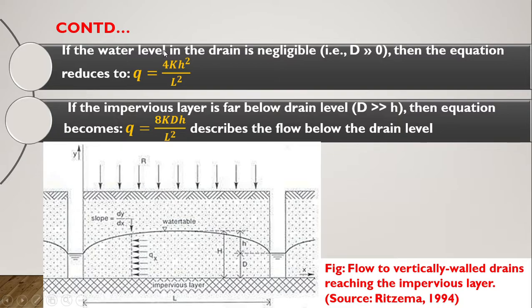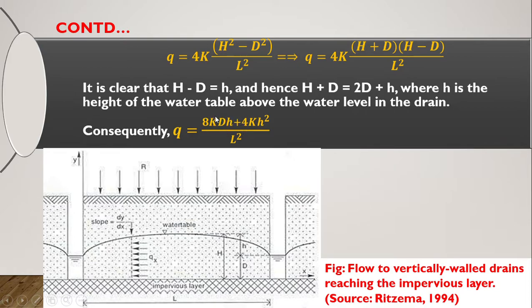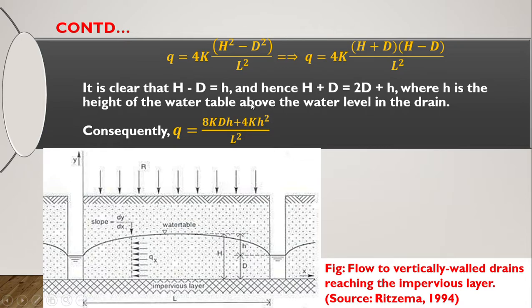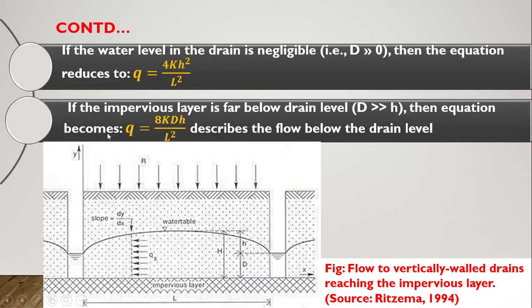If the water level in the drain is negligible, i.e. D ≈ 0, then the equation reduces to: q = 4Kh²/L². If the impermeable layer is far below the drain level, i.e. D >> h, then the second term is negligible and the equation reduces to: q = 8KDh/L². These are two important special-case conditions of Hooghoudt's equation.